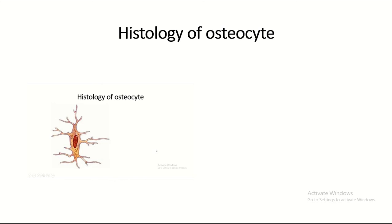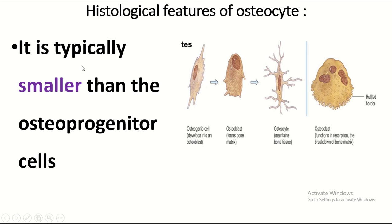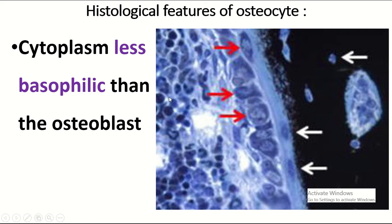Welcome to Easy Human Anatomy channel. Today I'd like to discuss the histology of the osteocyte. The osteocyte is typically smaller than the osteoprogenitor cell. This is the osteoprogenitor cell, this is the osteocyte. This is the osteoblast, this is the nucleus of the osteoblast, and this is the cytoplasm of the osteoblast.